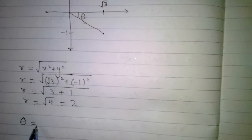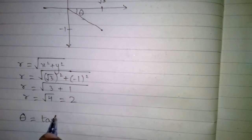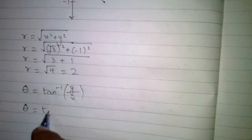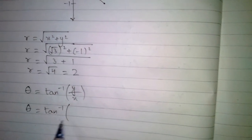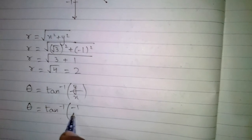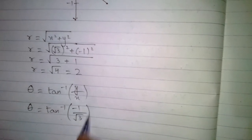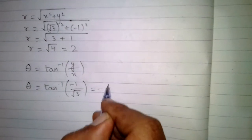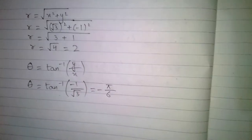Now we will find the argument or angle of this complex number. The argument is tan⁻¹(y/x). So theta = tan⁻¹(−1/√3), which gives theta = −π/6. The angle is −π/6 because the point is in the fourth quadrant.